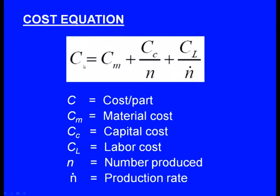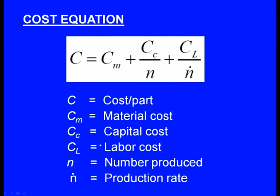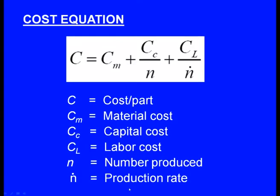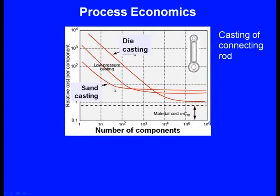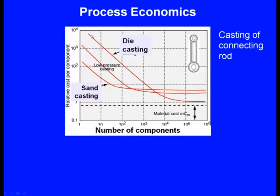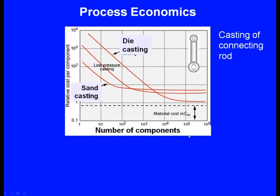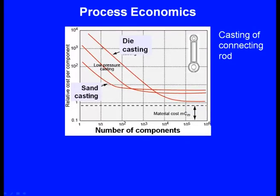The cost equation is: C = C_m + C_c/N + C_l/N, where C is cost per part, C_m is material cost, C_c is capital cost, C_l is labor cost, and N is the number produced or production rate. Looking at the process economics graph for die casting: if only 10 components are produced, cost is very high, but as the number of components increases, cost per product drastically comes down.